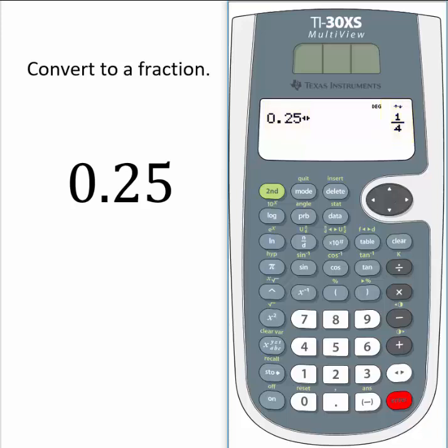0.25 is equivalent to the fraction 1 fourth. And if we select the toggle button again, the calculator will switch our answer back to the original decimal.